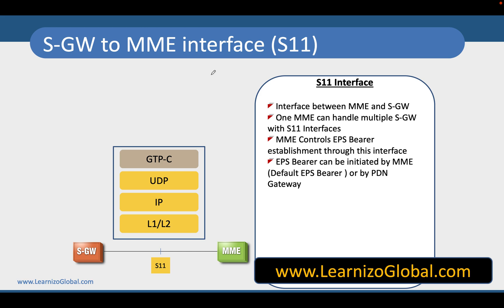Let's talk about the next interface, which is S11. Whenever a user is requesting for some sessions to be created, the MME cannot take care of it — session creation has to be taken care of by the SGW and PGW. So the MME needs to give a command to the SGW, and that happens on the S11 interface, which uses a protocol called GTP-C — GPRS Tunneling Protocol for Control Plane.